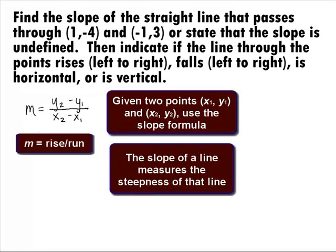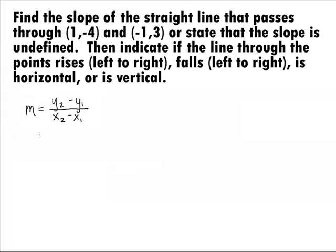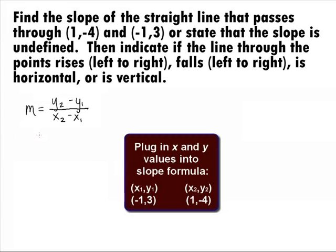We can think of the expression rise over run to help us understand and remember the slope formula. Note how the numerator is the difference of the y values, which tells us how much we rise up or down, and the denominator is the difference of the x values, which tells us how much we run left or right. It doesn't matter which point you call point 1 or point 2, as long as you are consistent throughout that problem.